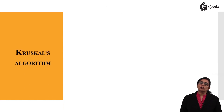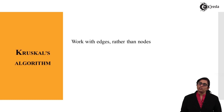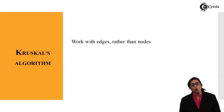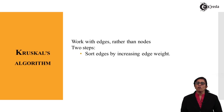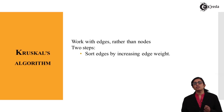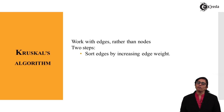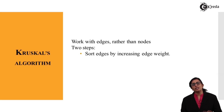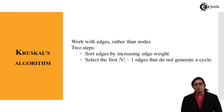Now, how does the Kruskal algorithm work? Kruskal works with edges rather than nodes — the edge being the line which joins two nodes or vertices. The steps followed are: we sort the edges by increasing edge weight, forming a tabular format, and then we select edges which do not generate a cycle.